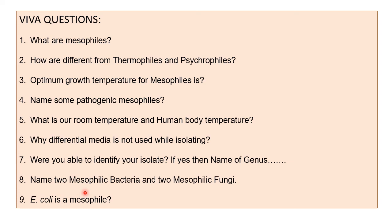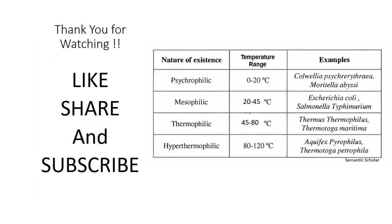Another question could be: name two mesophilic bacteria and two mesophilic fungi. Those are some basic viva questions on this topic. I have also included a table showing the nature of existence of microbes: psychrophiles grow at 0 to 20 degrees Celsius, mesophiles at 20 to 45 degrees, thermophiles at 50 to 80 degrees, and hyperthermophiles at 80 to 120 degrees, with examples provided for each. I hope this information is helpful. Thank you for watching — do like, share, and subscribe to my channel.